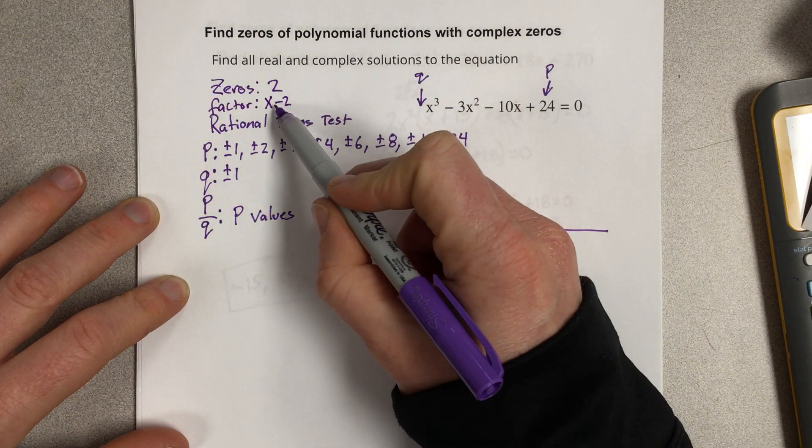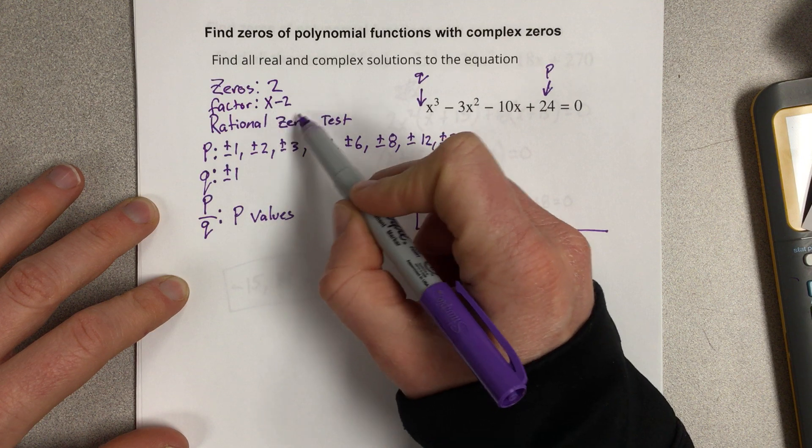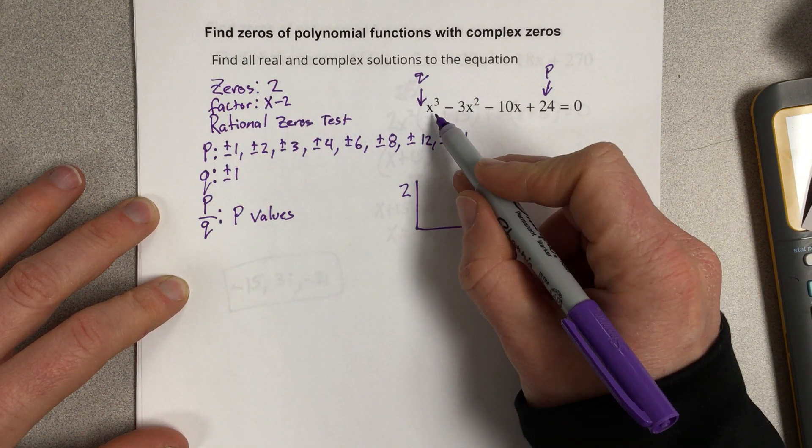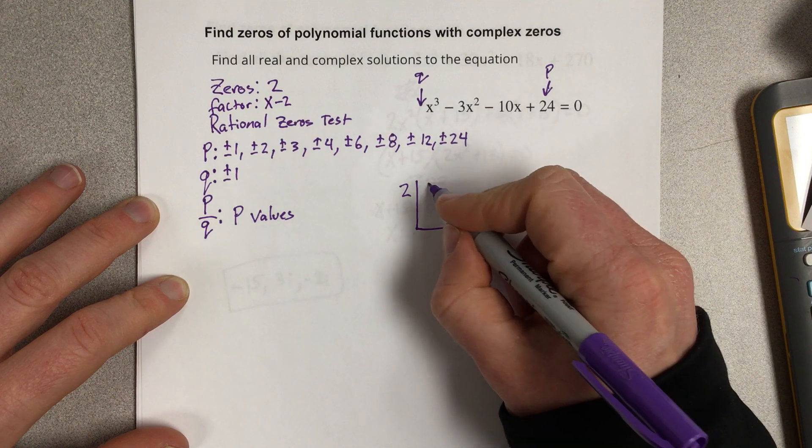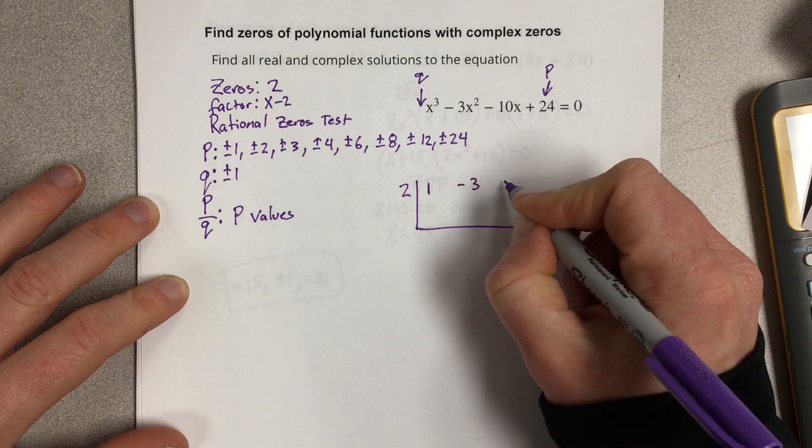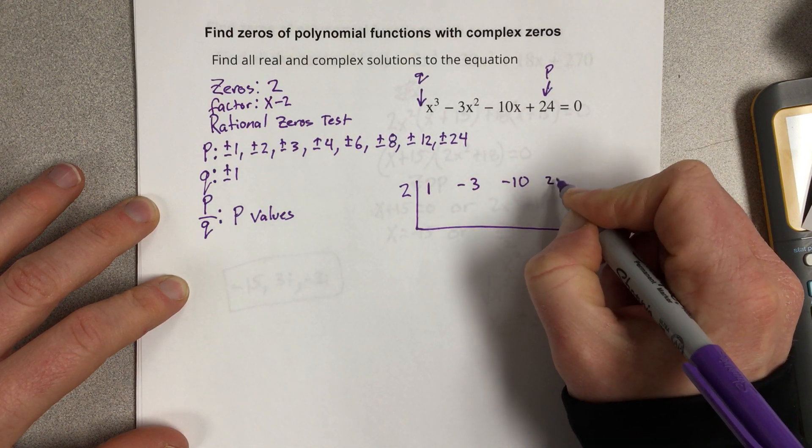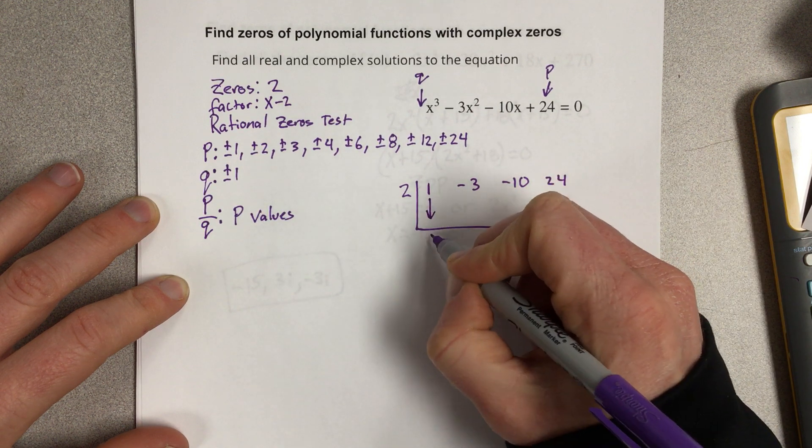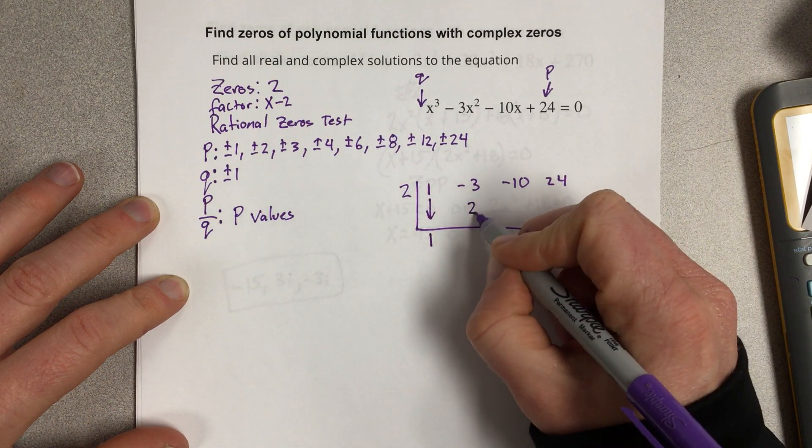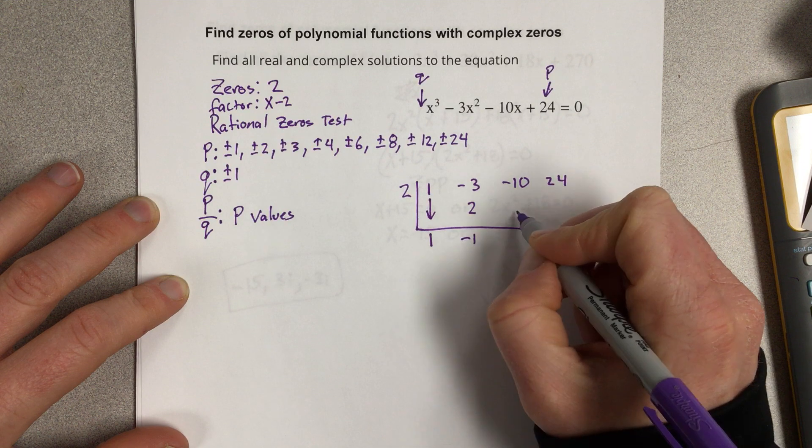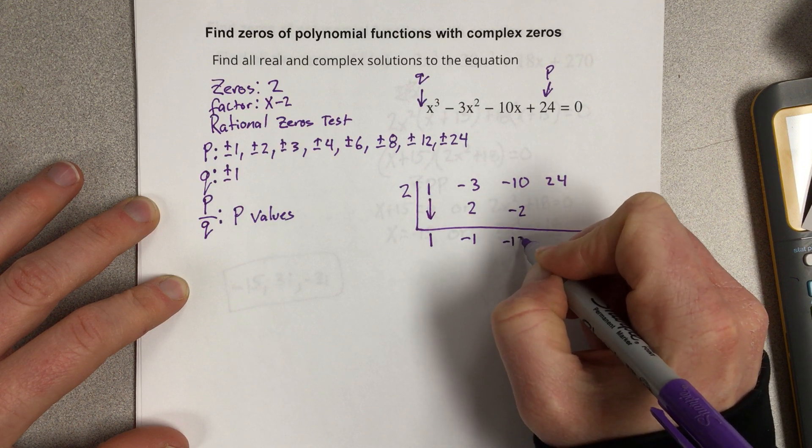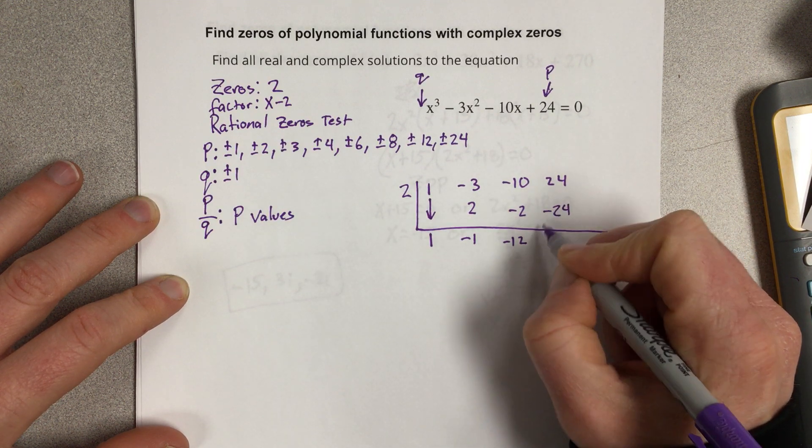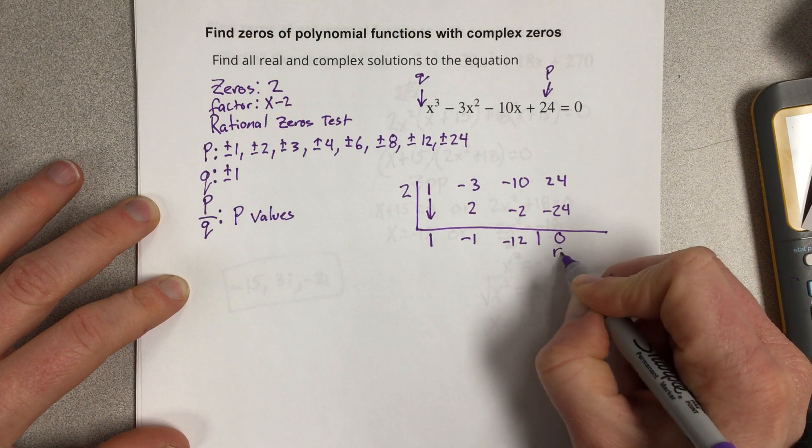Because ZPP would tell us to say x - 2 = 0. Add the 2 over and you get 2 there. We're going to use the leading coefficients. So that's 1, -3, -10, 24. Bring the 1 down. Multiply. Add. Multiply. Add. Multiply. Add. You get 0. This is our remainder.